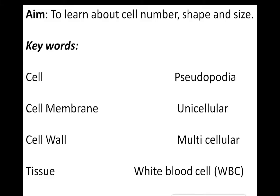In this session we are going to learn about cell number, shape and size. Please write down the key words: cell, cell membrane, cell wall, tissue, pseudopodia, unicellular, multicellular, and white blood cells.